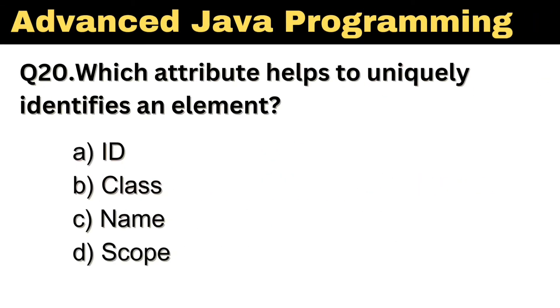Question number 20: Which attribute helps to uniquely identify an element? The right answer is Option D: Scope.